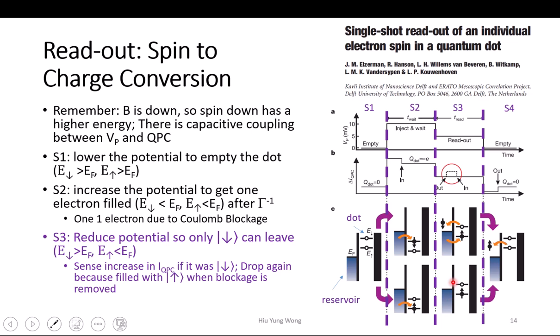But if your spin was pointing up, it cannot go out because it is below the Fermi level, so your current is going to be constant. That is how you do the spin-to-charge conversion in a real reading scheme. You don't need to do that — you might already have the qubit inside the quantum dot after manipulation, so you will be either spin up or spin down. You just apply the readout pulse.